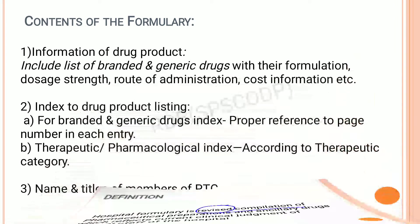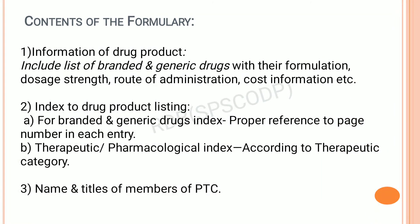The next point is the contents of the formulary. The first point is the information of drug products. It includes the list of branded and generic drugs with their formulation, dosage strength, route of administration, cost information, etc.